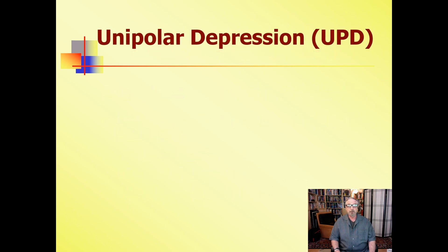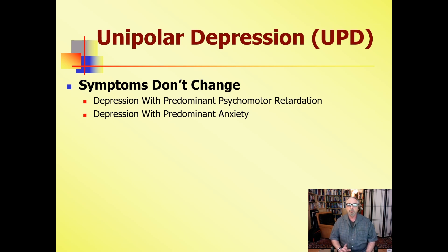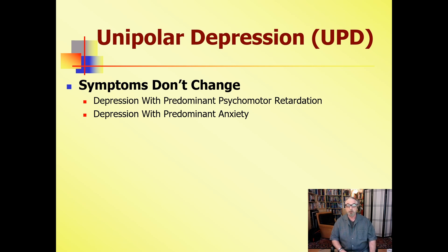So let's talk about unipolar depression. The most important thing: symptoms don't change. People have the same symptoms every day, week after week, month after month. If you're lucky, you'll spontaneously remit in three to four months or respond to medication; otherwise, it can go on for a very extended period of time. Typically, people present as either psychomotor-retarded depression or depression with predominant anxiety — they don't switch back and forth between the two. It's persistent, and the course can be long.